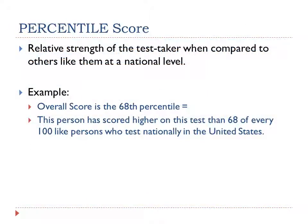Percentile scores show the relative strength of the test taker when compared to others like them at a national level. These scores are most useful if the HSRT is being used as an admission test, which we do not do at Creighton University. However, they do give you an insight into how your abilities to reason critically compare with other students entering health sciences educational programs. For example, if a student has an overall score in the 68th percentile, that means this person has scored higher on this test than 68 of every 100 like persons who test nationally in the United States.